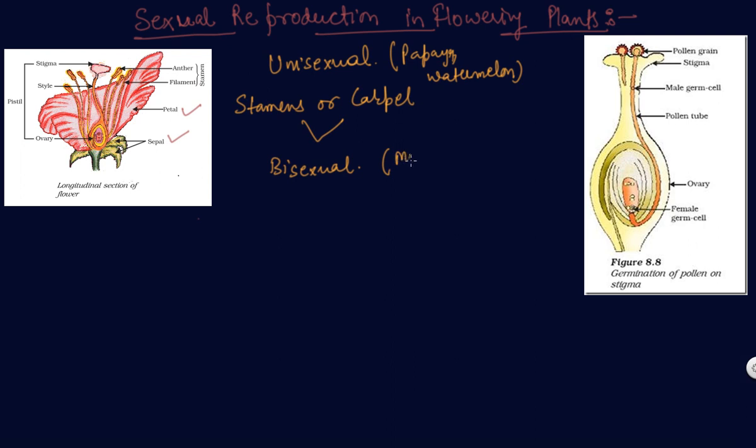Like mustard and hibiscus. These types of flowers are called bisexual when they contain both stamens and carpels.